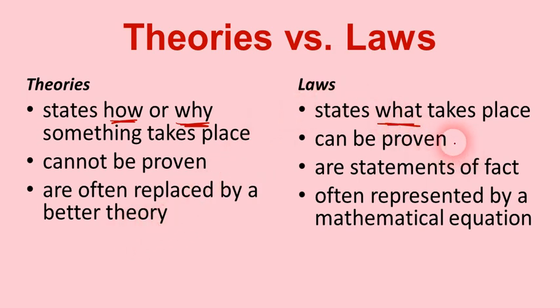Whereas laws can be proven. In fact, we can prove some scientific laws right in our own high school chemistry laboratory. Laws are statements of fact. And very often, laws are represented by a mathematical equation. For example, Newton's second law is sometimes written as force or F equals MA, a mathematical equation. You can prove that in the lab. These are the fundamental differences between theories and laws.